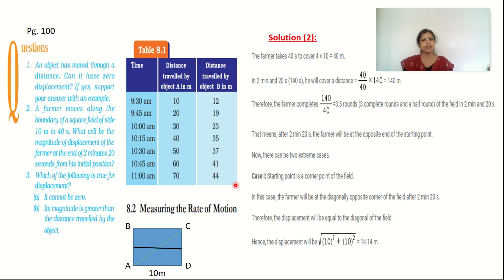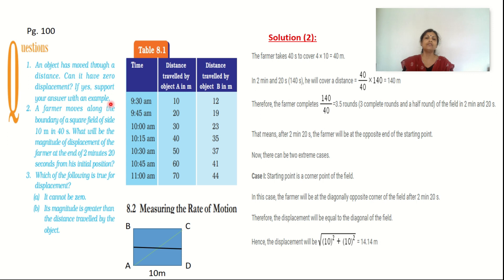To the left side of the table some numericals are asked. Look at the first question: an object has moved through a distance — can it have zero displacement? If yes, support your answer. Now, when an object has moved a certain distance, there is a possibility that the object may have zero displacement.